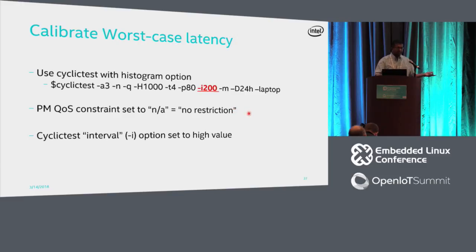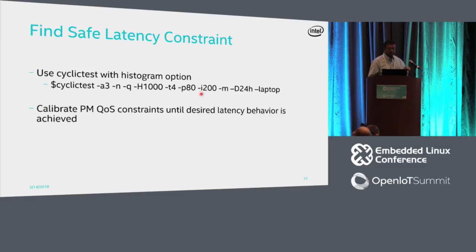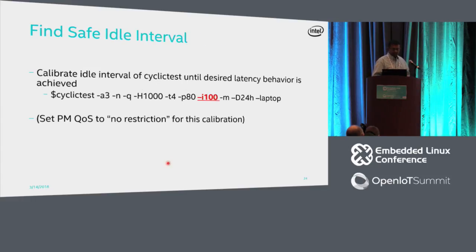When getting the worst-case scenario, we remove all restrictions — write N/A to PM QoS — and use a high interval so all C-states can enter. To find a safe latency constraint, we keep the interval high so it doesn't block anything, then try different latency constraints in PM QoS until we get good results. Similarly, to find the good idle interval, we remove all PM QoS restrictions and try different intervals until we get good results.